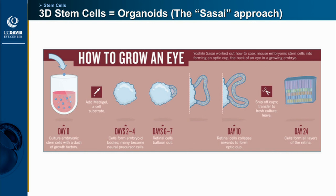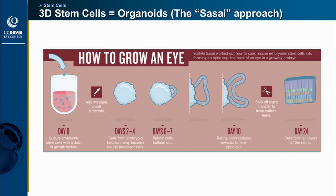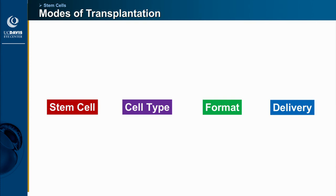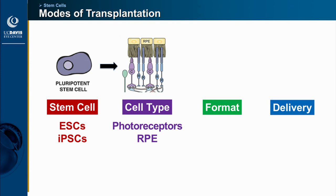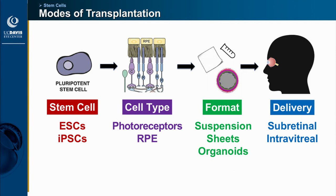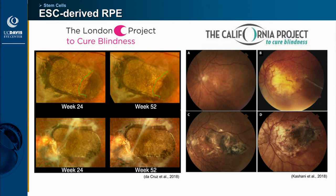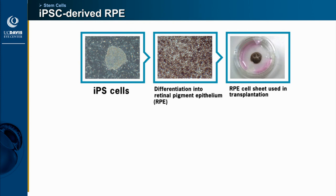More complex structures like organoids, which show all the different layers of the retina in a single 3D cell culture, can potentially be transplanted en bloc. Just as in gene therapy — once you've developed your stem cell type, the format, and a delivery method — you can have some type of stem cell therapy. Two studies from London and California published in 2018 showed that sheets of embryonic stem cell-derived RPE can be transplanted subretinally in a safe manner. A group from Japan also demonstrated that iPSC-derived RPE has been transplanted in one patient.